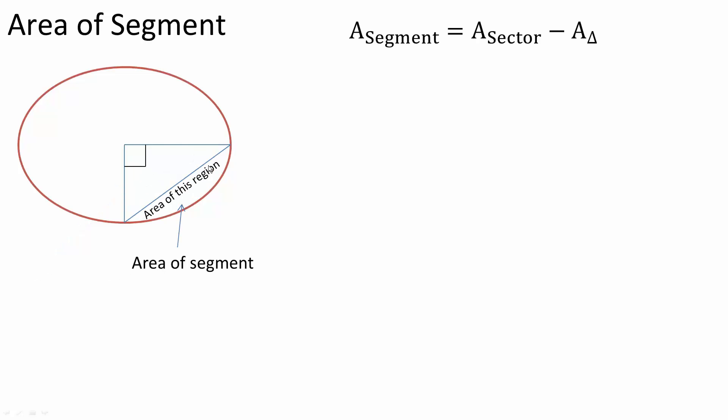And what we want to find is the area of a segment. So this piece right here, this is the area of a segment. And so it's going to be the area of the sector, this whole piece right here, minus the area of the triangle, this piece right here would give us this piece right here. This is the area of the segment. And in this video, we will go over the area of a segment.